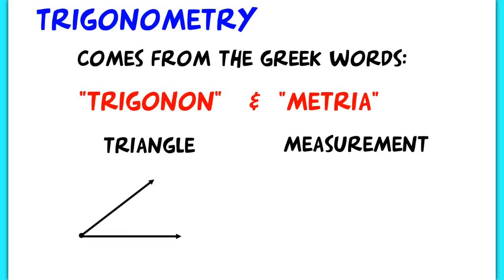Trigonometry actually comes from two Greek words meaning triangle and measurement. So we're going to be looking at basically some stuff that you've already seen in geometry. In geometry, when you measure angles, you use degrees. What we're going to be talking about today, though, is radian measures.